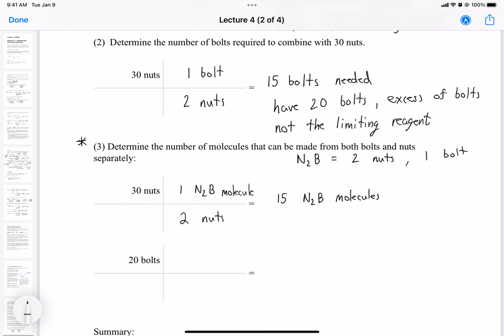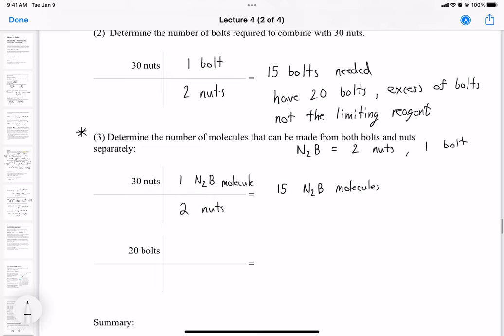Okay, and then in the example for bolts, we know that for every N2B molecule there's only one B in the formula. So it's going to be one N2B molecule requires one bolt. So this means we can produce 20 N2B molecules.